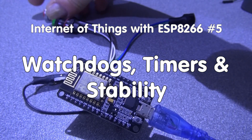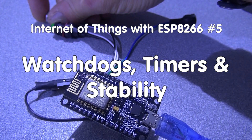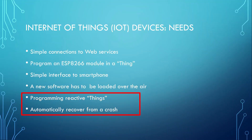Grüezi YouTubers! Here is the guy with the Swiss accent again. Our IoT device can now get data from the smartphone, get data from the web, and be programmed over the air. In the next step, the user interface has to have fast reaction time, and I want my device to recover from a bad or blocked state without any human interaction. This is the goal of today's episode: to create such a user interface for a push button and to stabilize the device as much as possible.